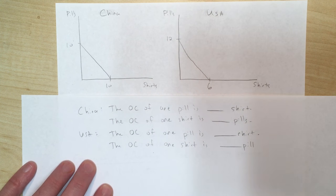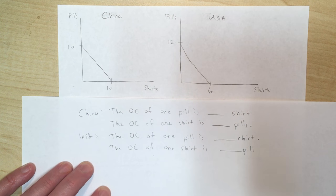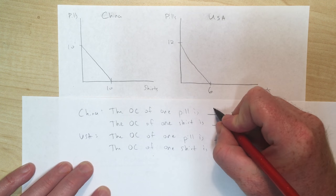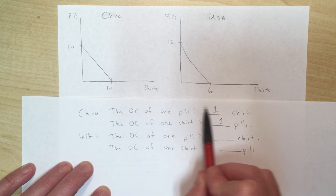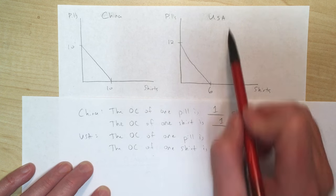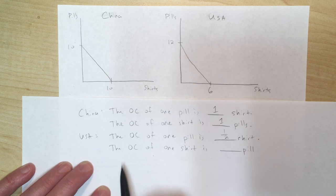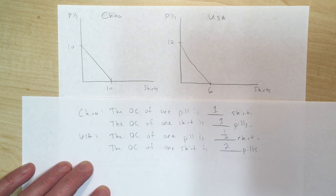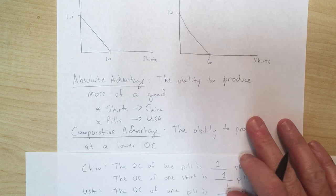Starting with China: China's numbers are easy — it's a 10-to-10 relationship, so a one-to-one relationship between the two goods. Every time they produce a shirt they give up a pill and vice versa. The opportunity cost of one pill is one shirt. For the US, the opportunity cost of one pill is half a shirt — every time they produce 12 pills they give up 6 shirts, so producing one pill costs half a shirt. The opportunity cost of one shirt is two pills.